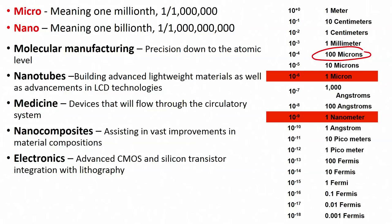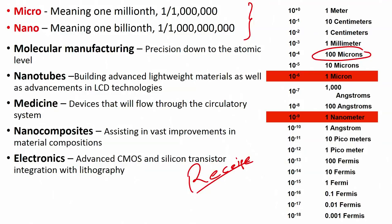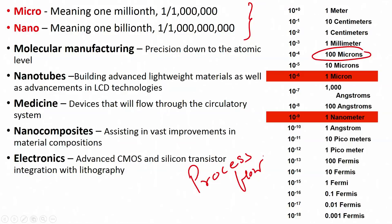These are extremely small values, and it is extremely important to understand something called a recipe or process flow. When you talk about molecular manufacturing, we are talking about precision down to the atomic level.